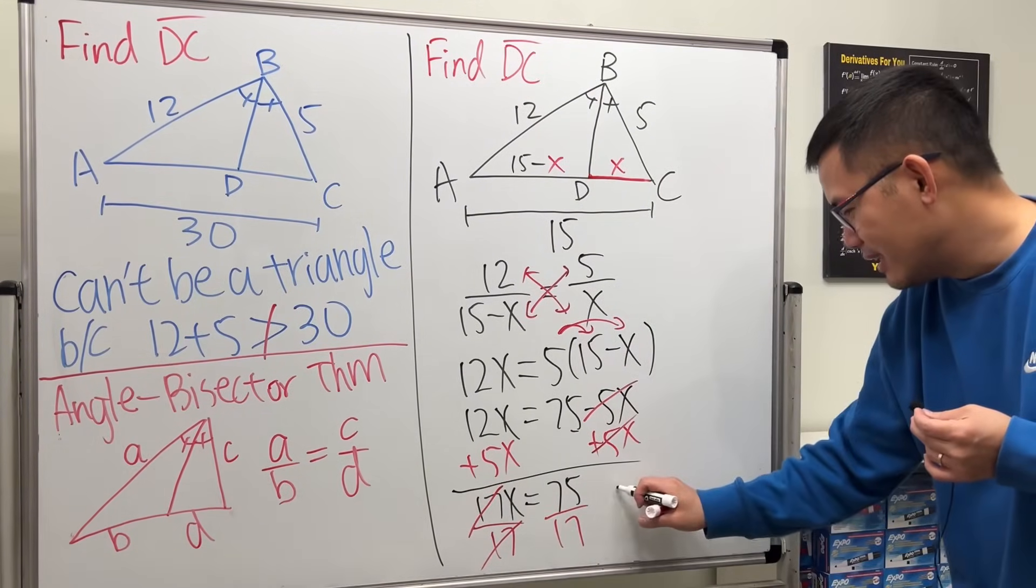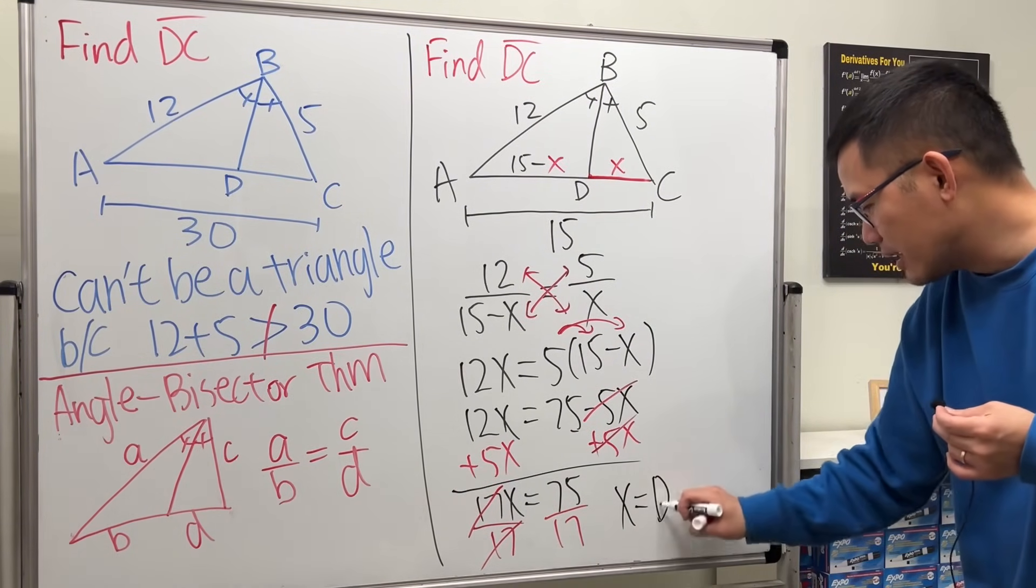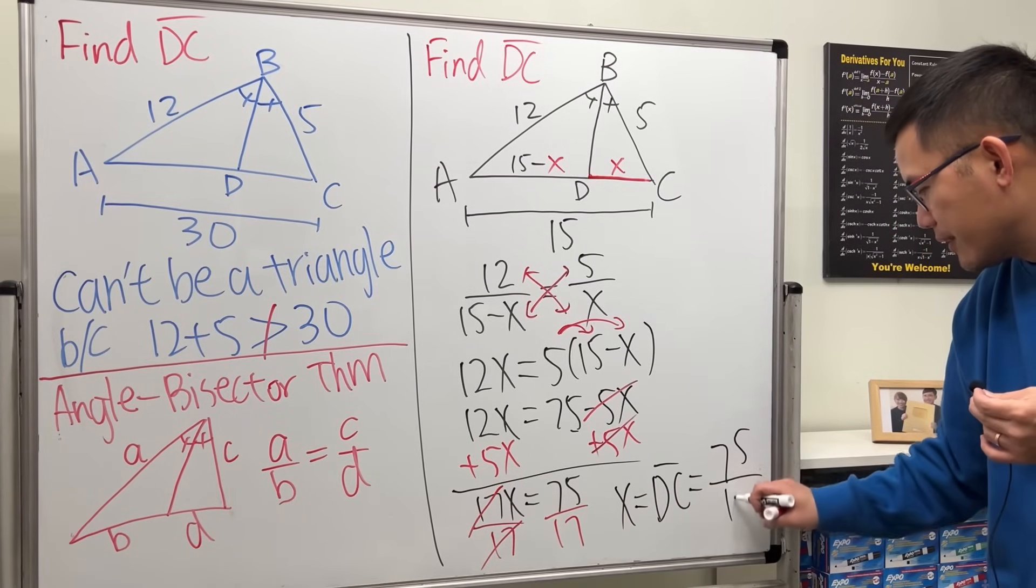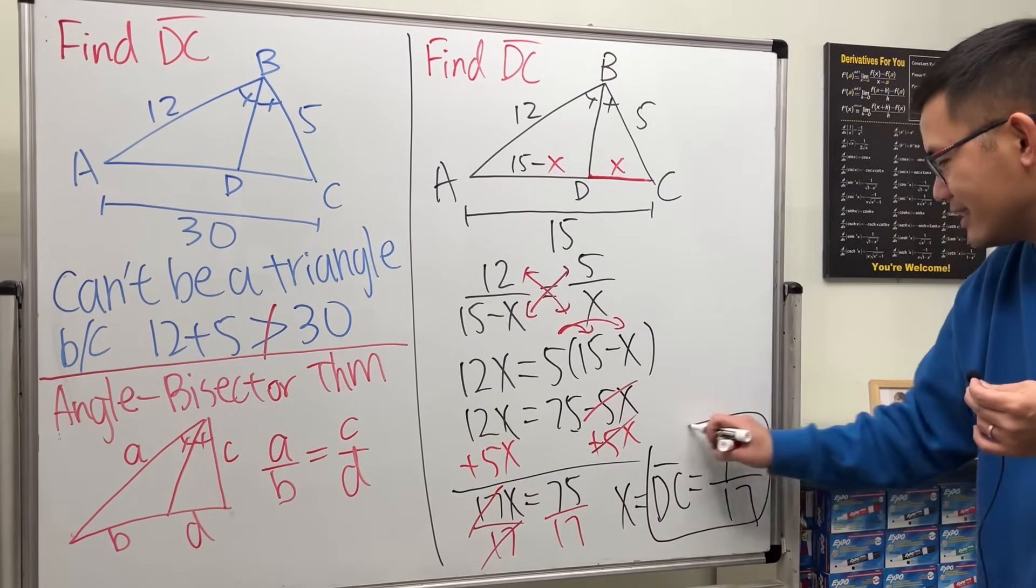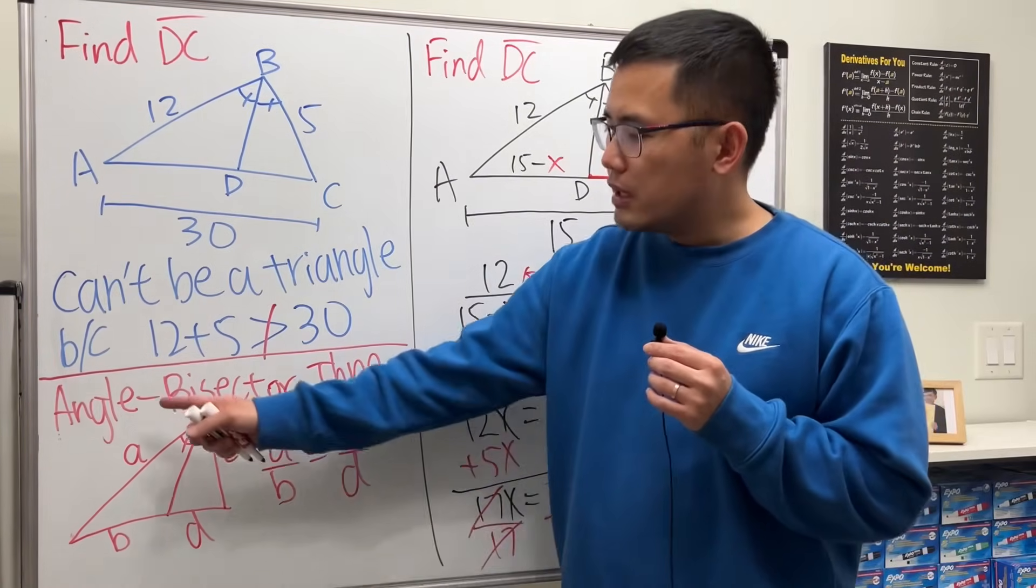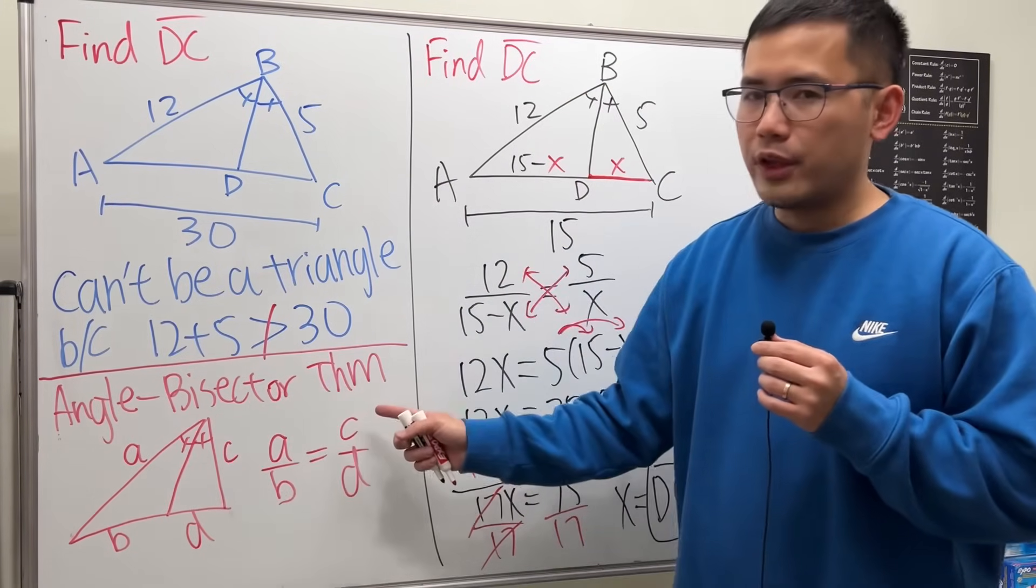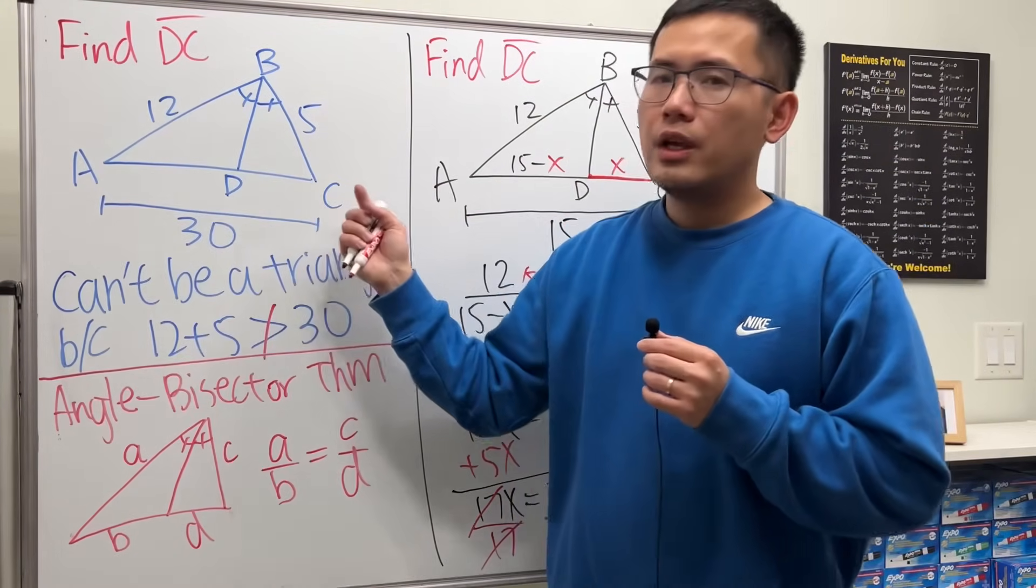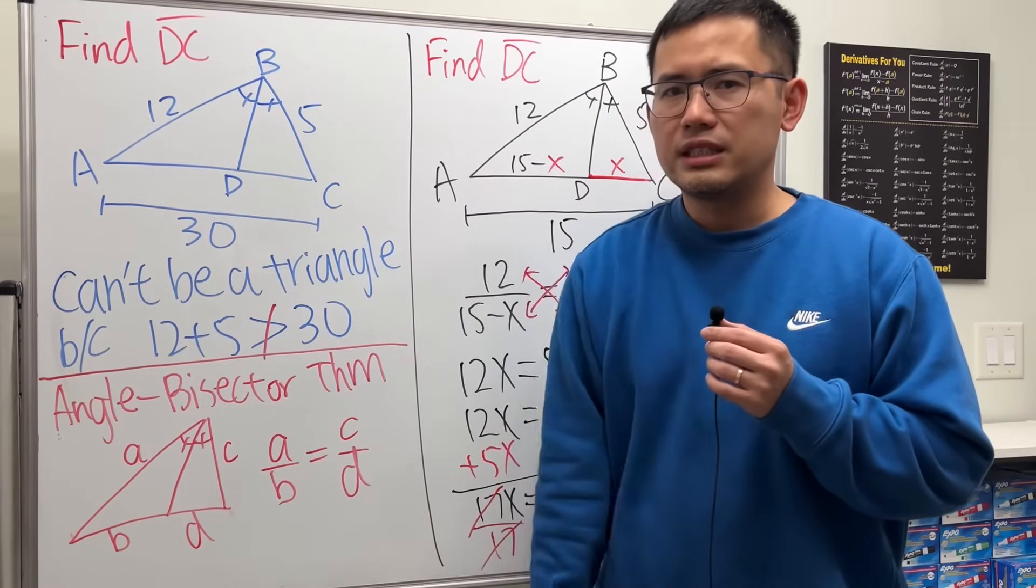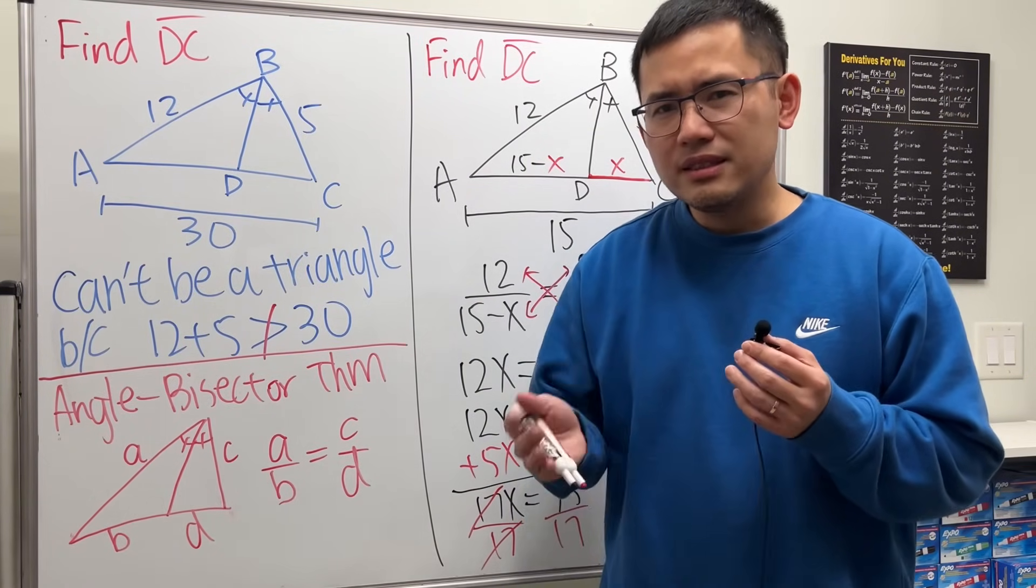So that's pretty much it. x, which is the length of DC, that's equal to 75 over 17. So that's the answer. And now let me just mention that if earlier we applied the angle bisector theorem to this picture, you can still solve for DC and you get about 6.8, but that answer is meaningless.